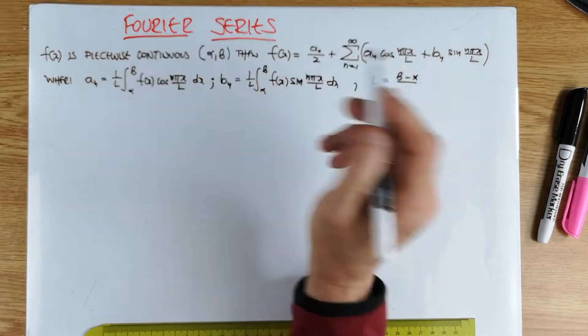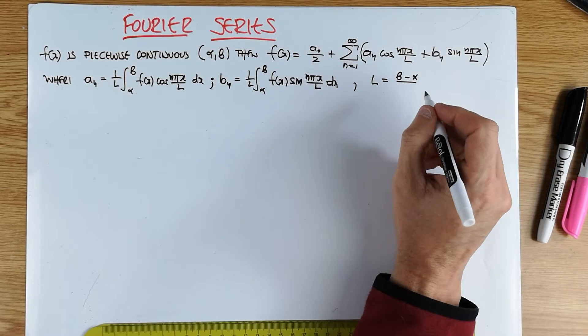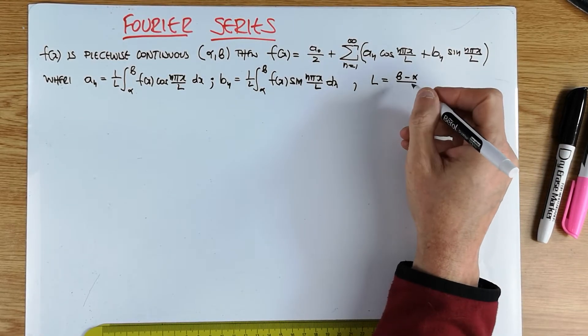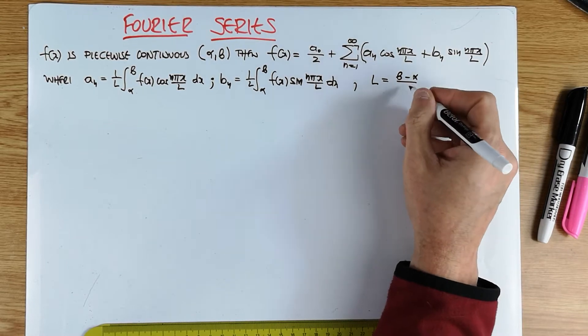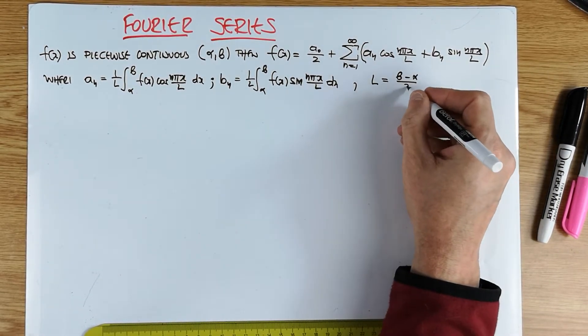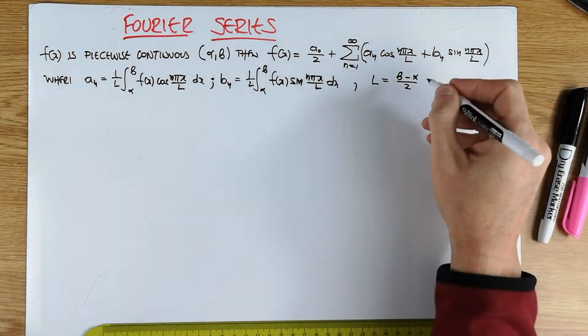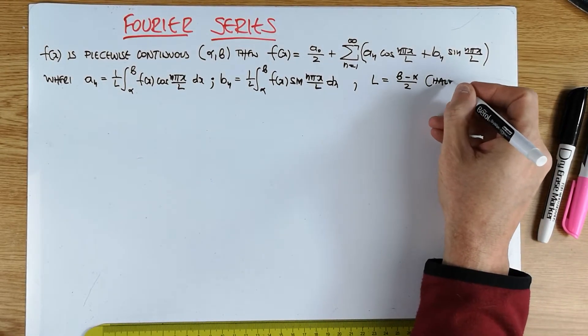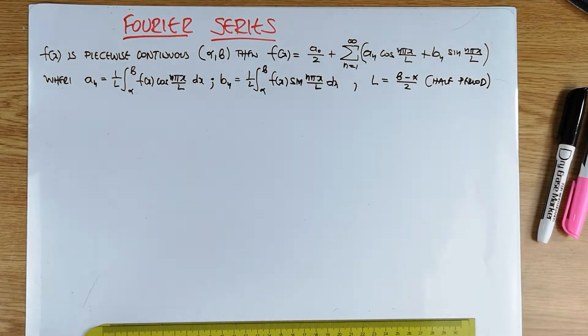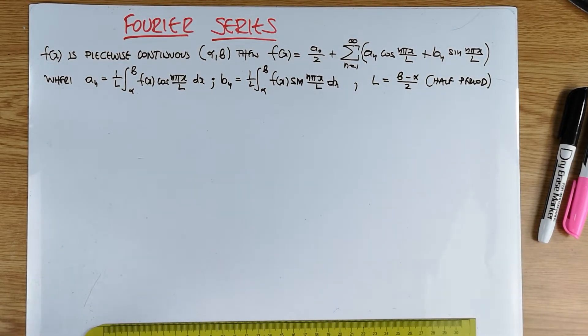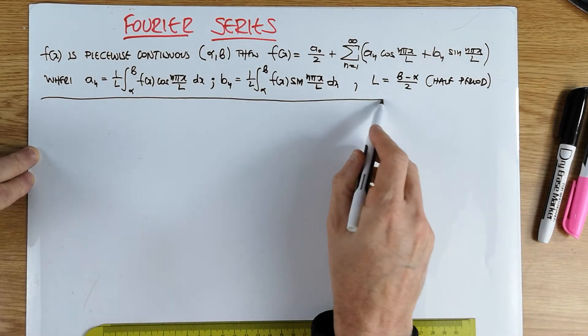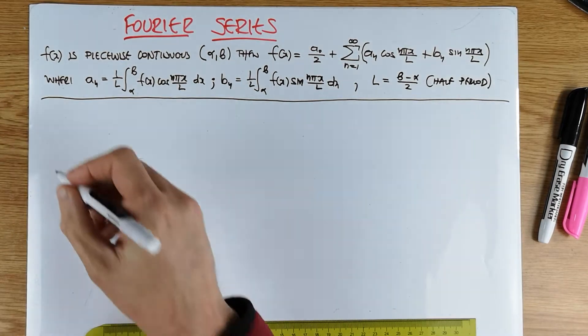Being of Greek background, the beta and the b for me is exactly the same, so I do apologize. It's meant to say beta and alpha there. So this is known as the half period. Let's look at an example to actually obtain the Fourier series, an approximation basically for a known function, and let's see what happens. So let's start with an example.